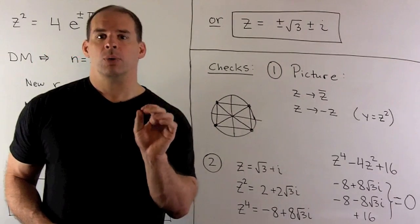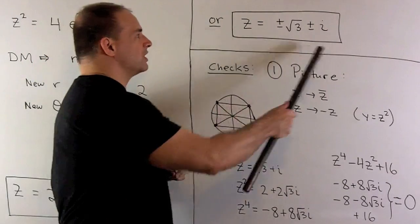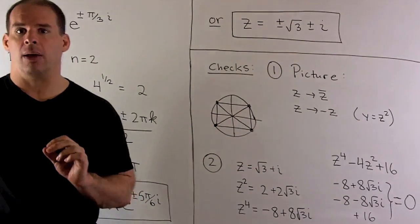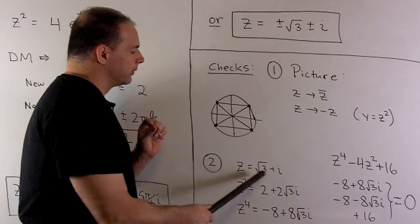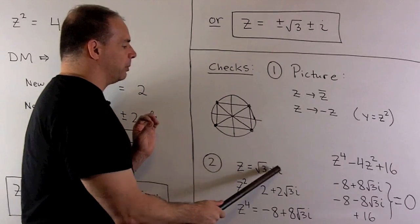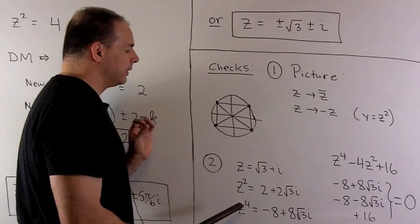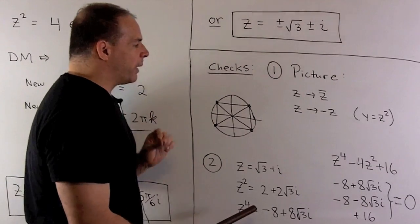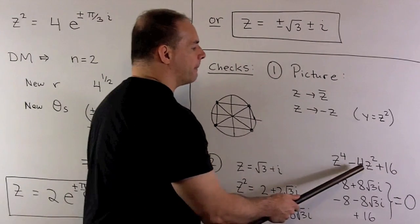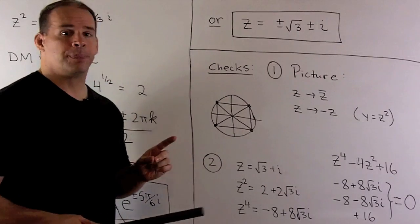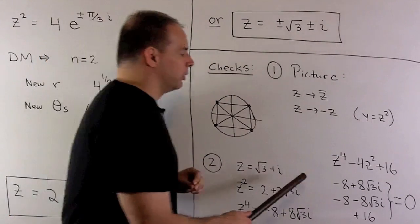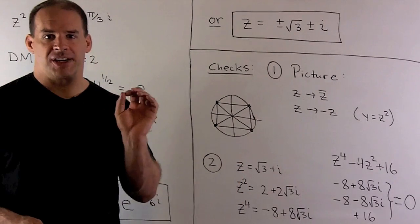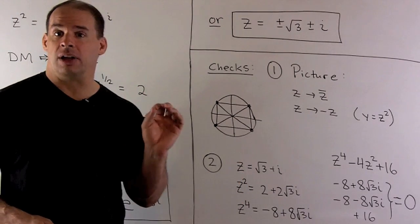Second check, well, we just want to check our solutions in the original polynomial. So we better get zero to come out. So we can work out, for instance, for z equal to square root of 3 plus i, we can square it, and we can take the fourth power. Now once I do that, I want to go back to z to the fourth power minus 4z squared plus 16. When we compute this, we know we get zero. So for that solution, it checks out. I'll leave it to you to check the other three.